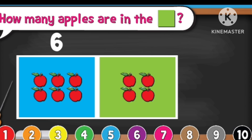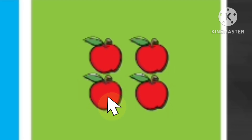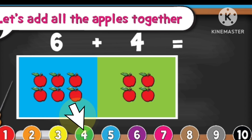How many apples are in the green square? 1, 2, 3, 4. There are 4 apples.